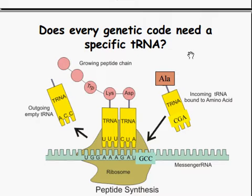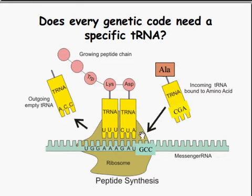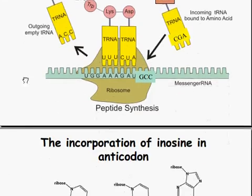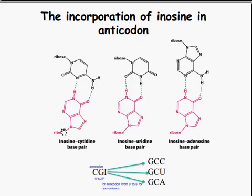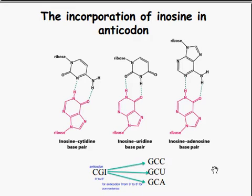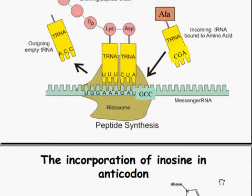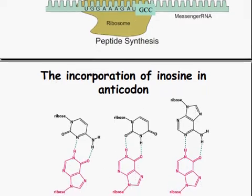Does every specific genetic code need a specific tRNA? The short answer is no. You can match up a different one and still get the same growing peptide chain. As long as it's closest within the same area, it should bind just fine. Something to look out for is the incorporation of inosine in the anticodon. Inosine can form base pairs with cytidine, uridine, or adenosine. So the anticodon CGI can bond for GCC, GCU, or GCA — multiple codons can bind at the same site depending on what's on the anticodon loop.